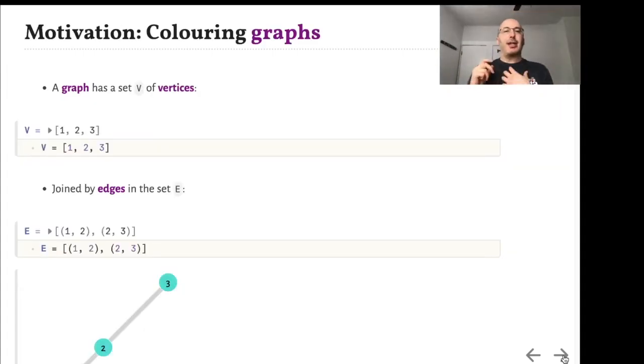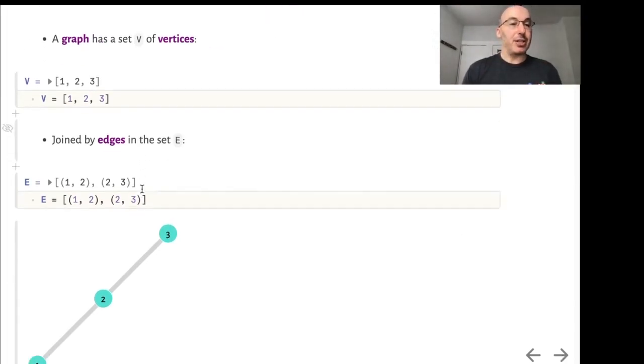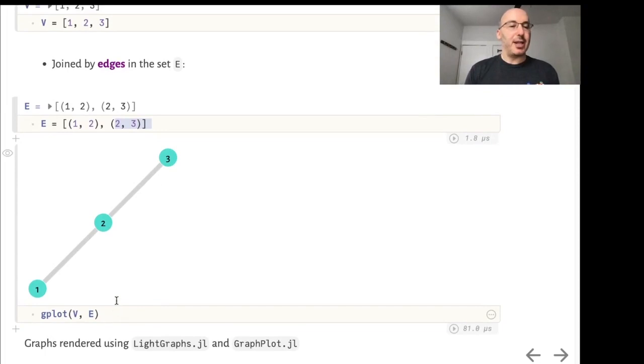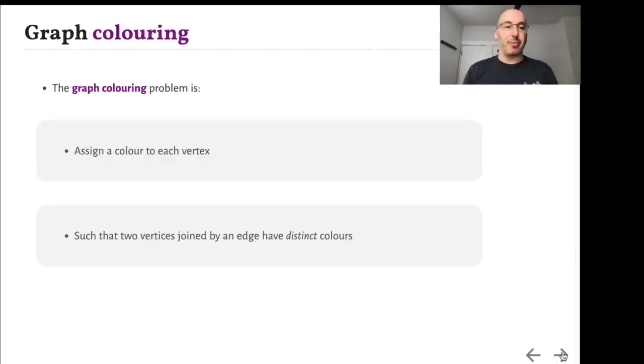Let's think about coloring graphs. A graph is just some vertices joined by edges. Suppose we have vertices 1, 2, and 3, and edges 1 to 2 and 2 to 3, which we can visualize like this. These graphs are plotted using lightgraphs.jl and graphplot.jl. The graph coloring problem is to assign a color to each vertex such that the colors are different for vertices which are next to each other, or in other words which are joined by an edge.